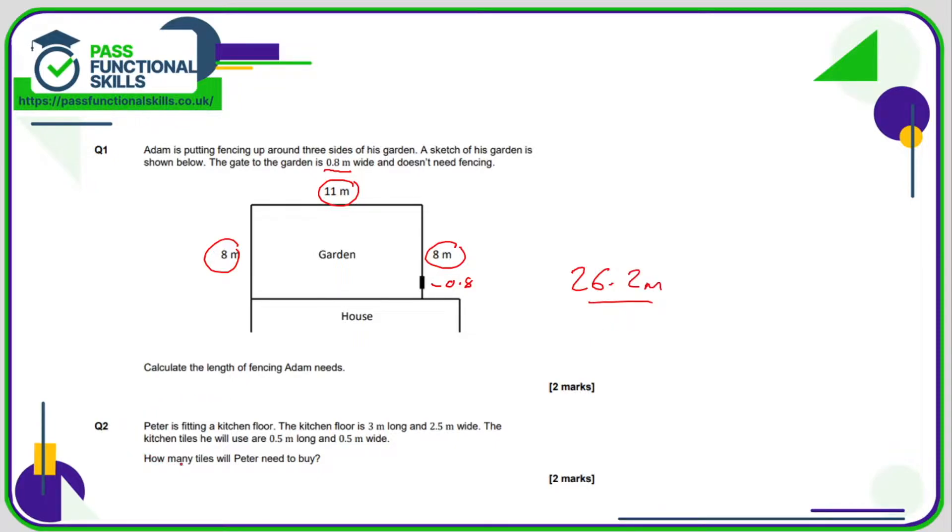Question two: Peter's fitting a kitchen floor. The kitchen floor is 3 by 2.5 and he's using tiles which are 0.5 by 0.5. So what I would suggest is work out the area of the floor.